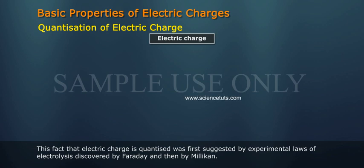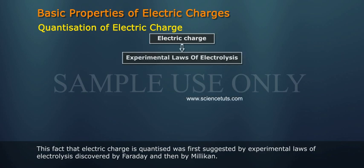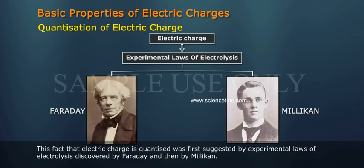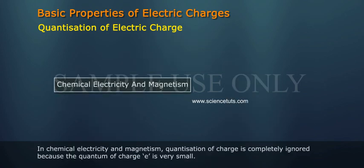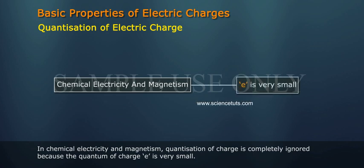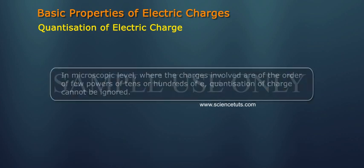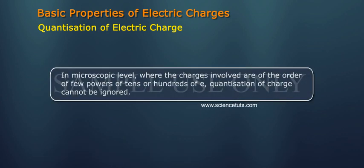And then by Millikan in chemical electricity and magnetism. Quantization of charge is completely ignored because the quantum of charge e is very small. In microscopic level, where the charges involved are of the order of few powers of tens or hundreds of e, quantization of charge cannot be ignored.